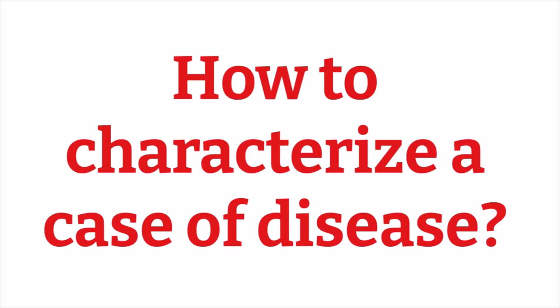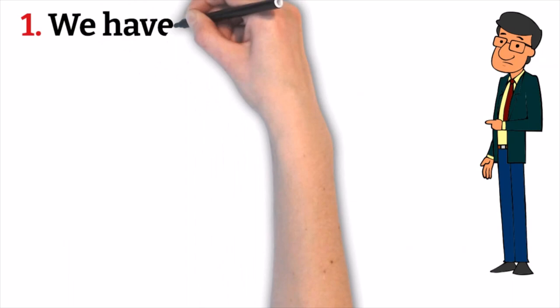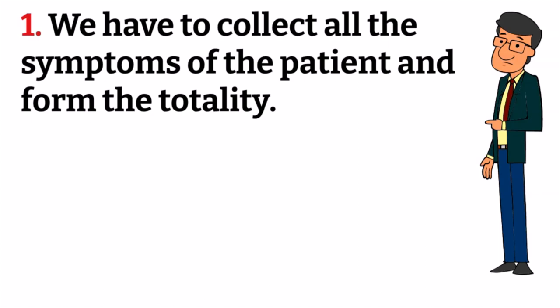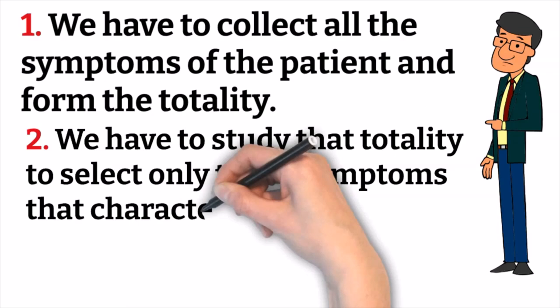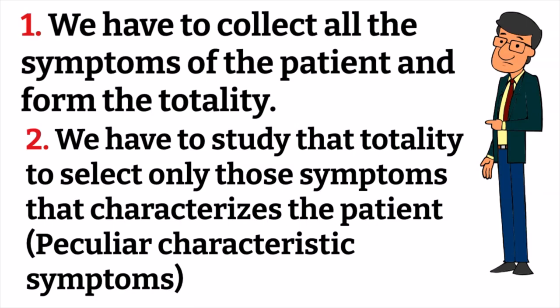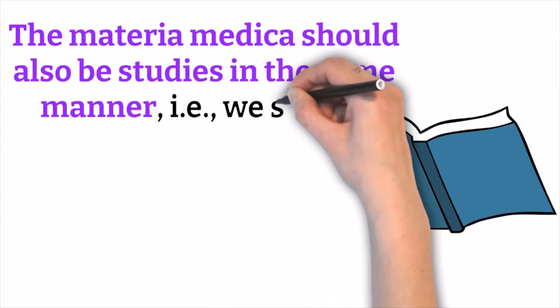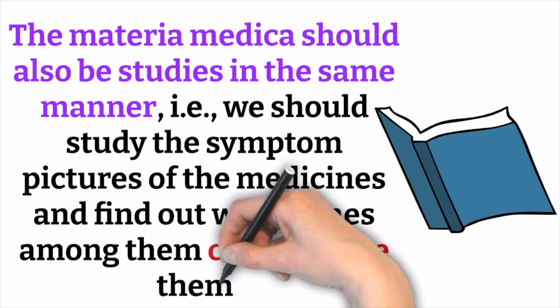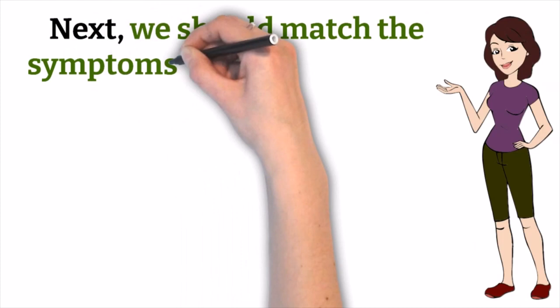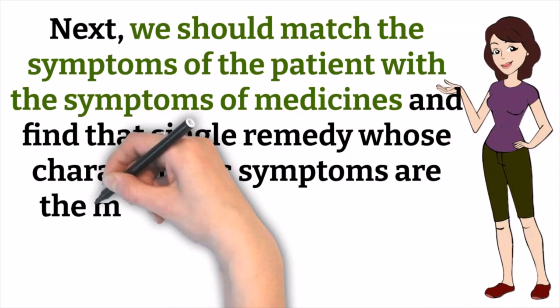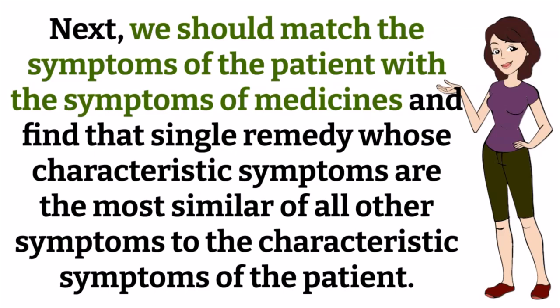To characterize a case of disease, first we collect all the symptoms of the patient and form the totality. Then we study that totality to select only those symptoms that characterize that patient — the peculiar characteristic symptoms. The materia medica should also be studied in the same manner: find which symptom pictures characterize each medicine. Next, match the patient's symptoms with medicine symptoms to find the single remedy whose characteristic symptoms are most similar to those of the patient.